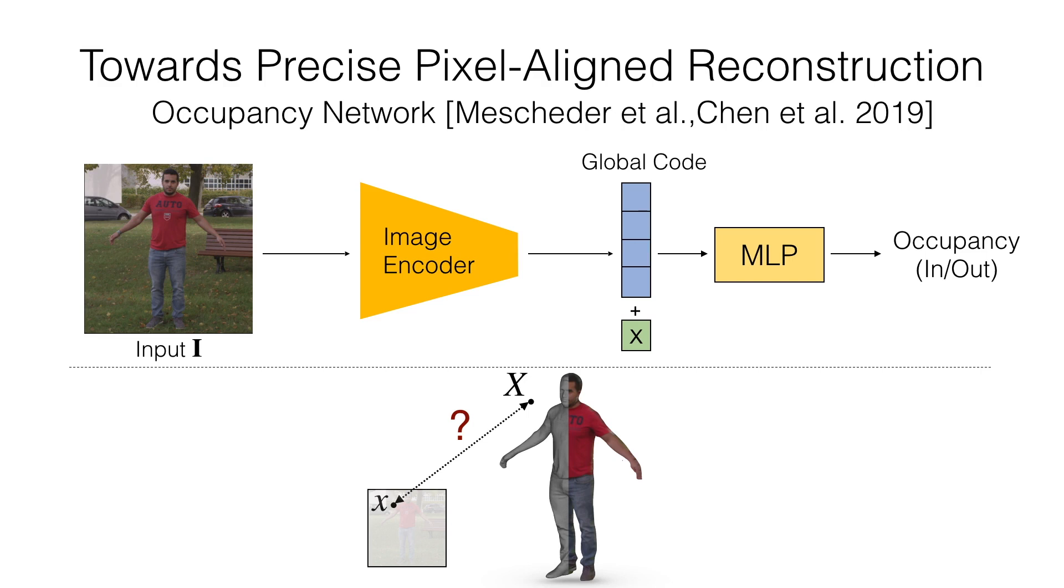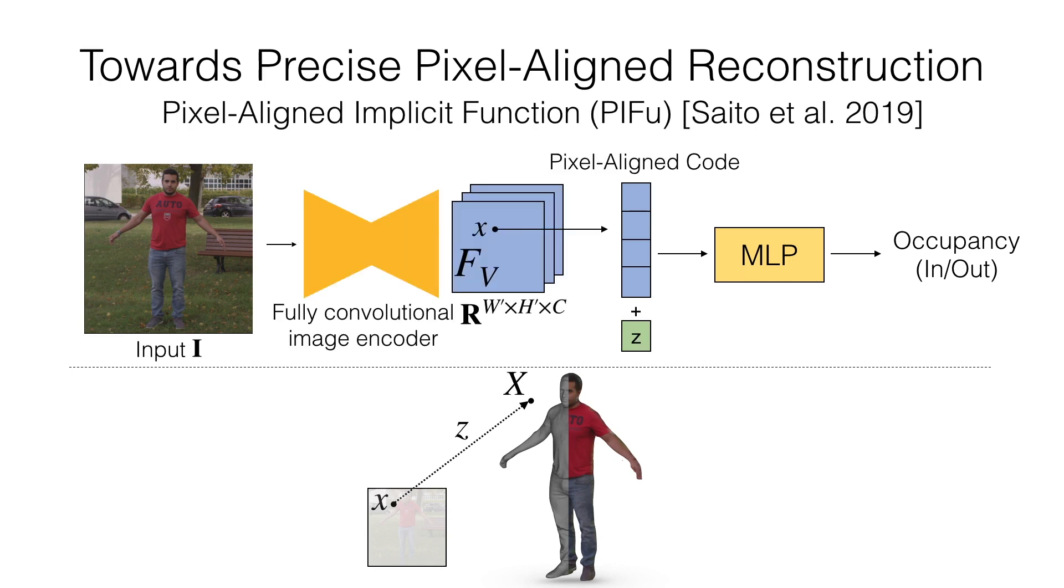Early works including occupancy network encode an input image as a global descriptor to reconstruct corresponding 3D shapes. However, this way the network does not leverage spatial relationship between queried 3D points and the input image. To address this issue,